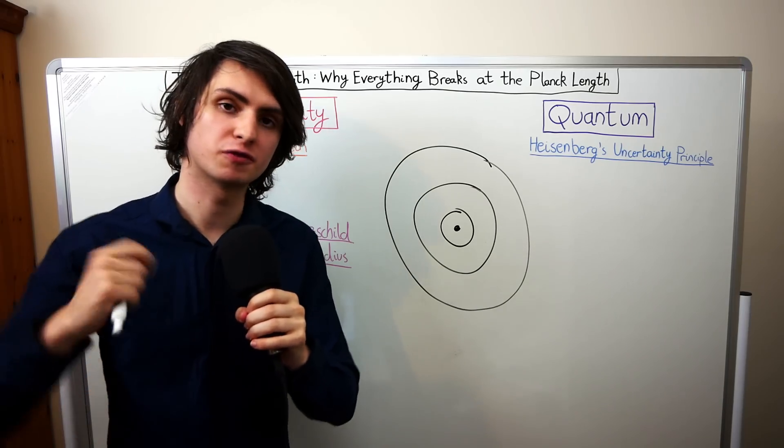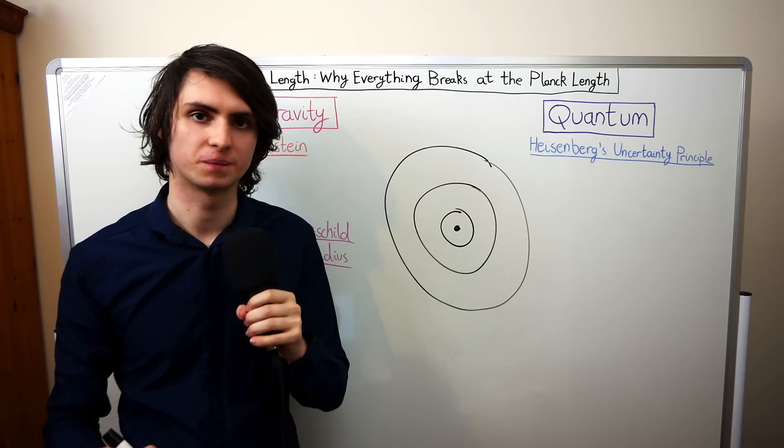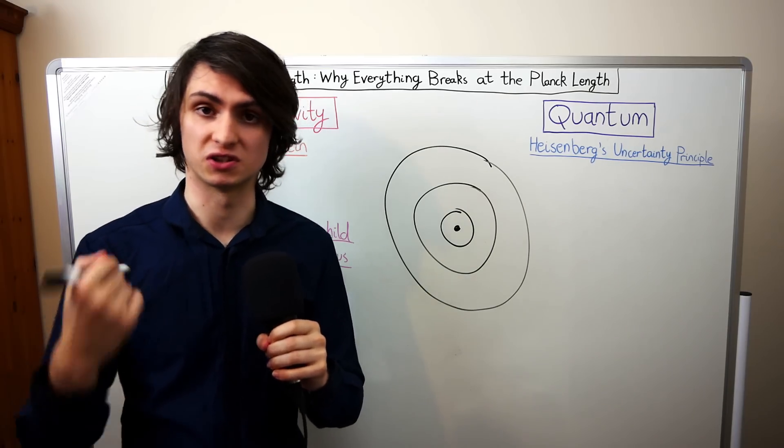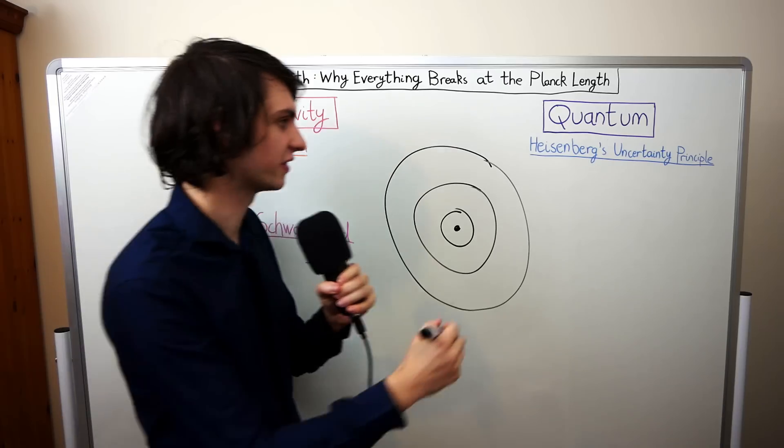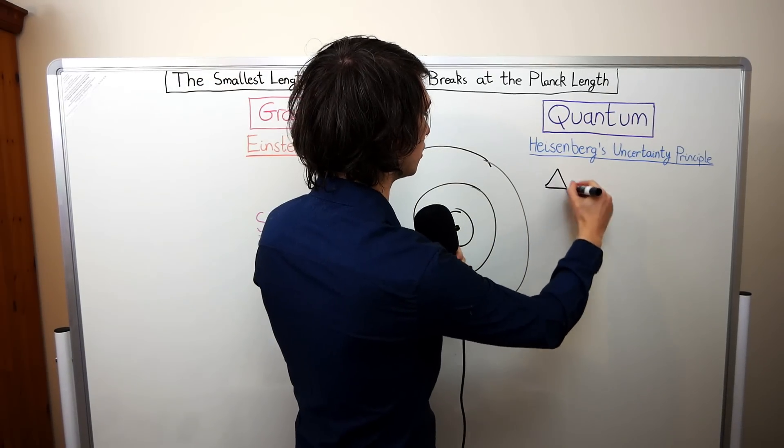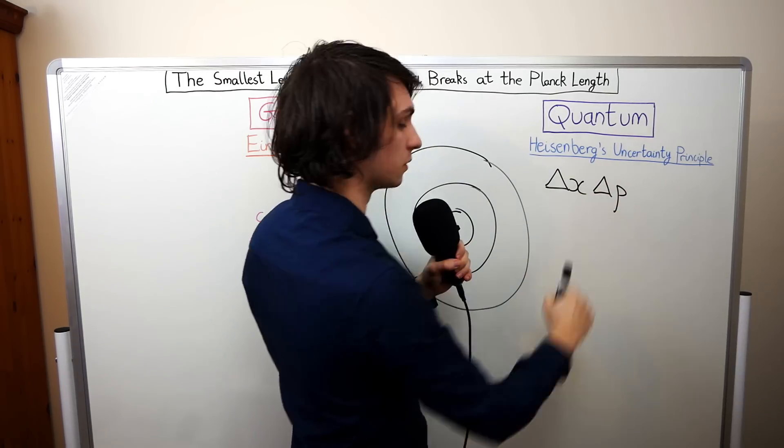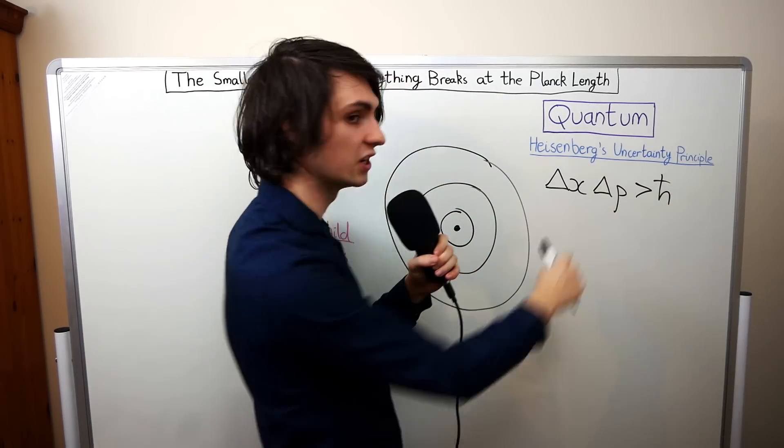The story begins with a famous relation in quantum mechanics, Heisenberg's uncertainty principle. This principle tells us that a particle cannot simultaneously have a precise position and a precise momentum. The mathematical form of it looks like this. We have that the uncertainty in a particle's position multiplied by the uncertainty in its momentum has got to be larger than some positive constant h bar.